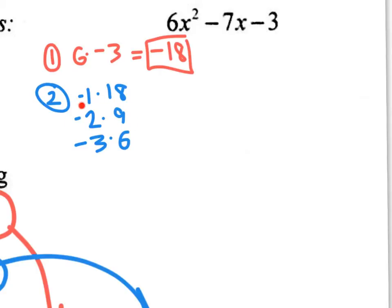The negative 2 and 9, right? But that gives you a positive 7, and we want a negative 7, so we know we have the right numbers. We just have the wrong signs. So make that a positive 2 and a negative 9 instead. Let's move on to step 3.